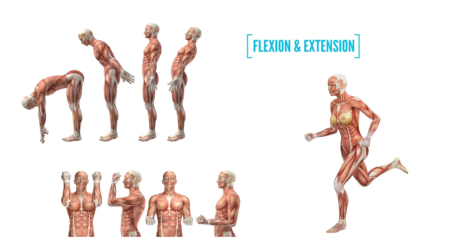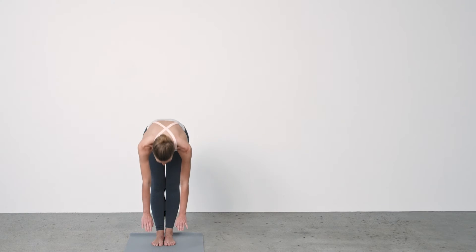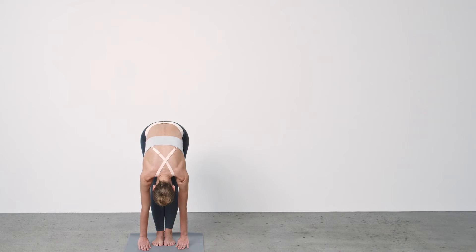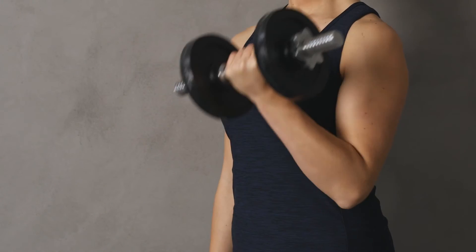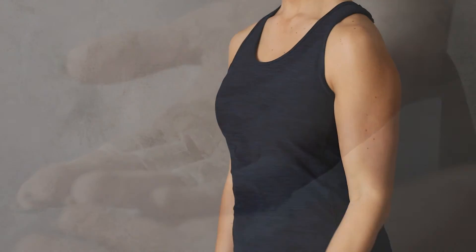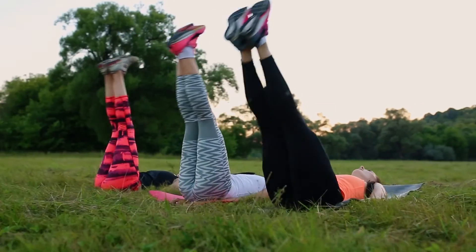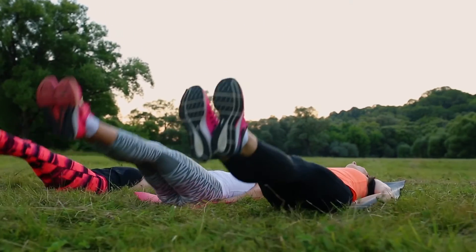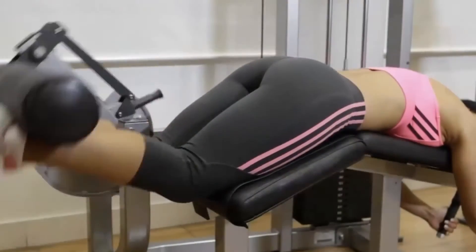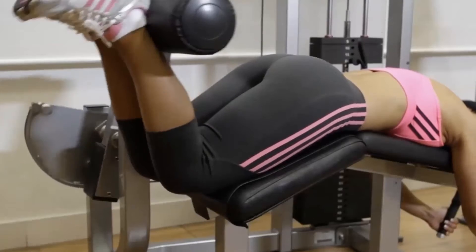When discussing the various movements of the body, it's helpful to consider movements in antagonistic or opposing pairs. Flexion indicates bending or decreasing the angle between the bones or parts of the body. Flexing the trunk means flexing at the vertebral column forward; flexing at the elbow brings the forearm to the shoulder, while flexing your fingers moves toward clenching your fist. The thigh can flex forward towards the torso, or the leg can flex at the knee and bring the heel to the glutes.